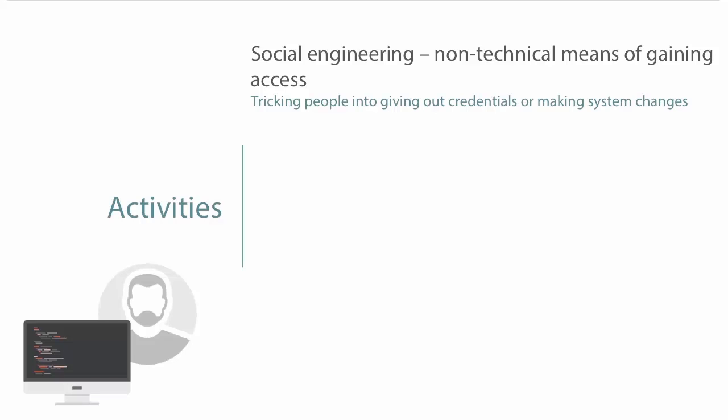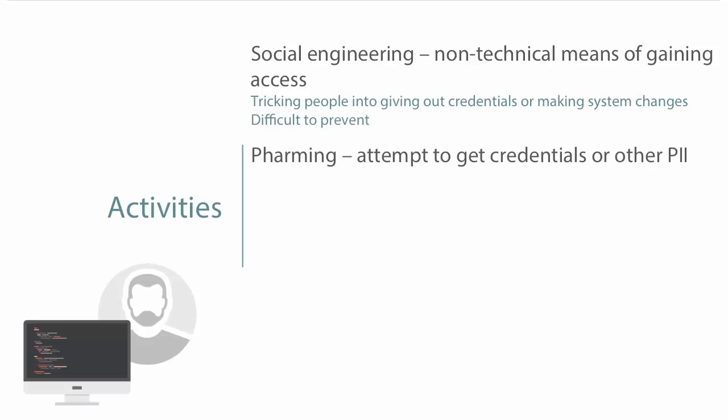The website the ethical hacker tricked the help desk into visiting allowed him to take full control over the help desk person's entire desktop session. If that help desk person had elevated privileges, he now had those elevated privileges too — all through wordplay and being nice. The company had hired him specifically to test their help desk. Social engineering is very difficult to stop because it requires extensive user training on verifying who someone is before taking any actions.